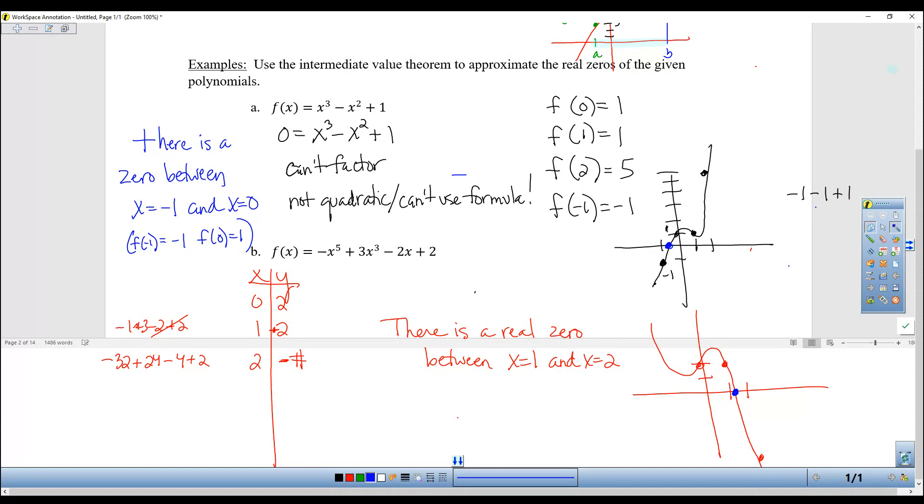And that's called the intermediate value theorem. So there's an intermediate value between the two that you find. If you find a positive and negative, that's how we can find one of the 0s.